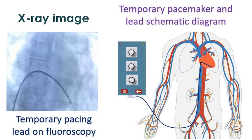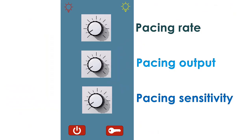The diagram shows the temporary pacemaker and lead reaching the right ventricle, the right lower chamber. The X-ray fluoroscopy image shows the temporary pacing lead tip in the right ventricle. A temporary pacemaker usually has three controls to change the pacing rate, pacing electrical output, and sensing sensitivity.